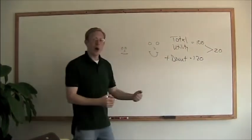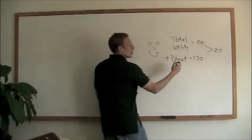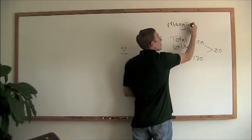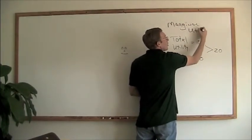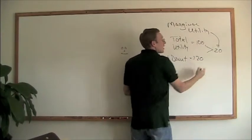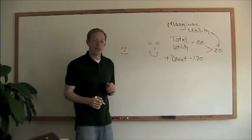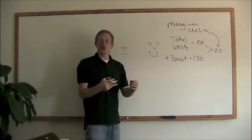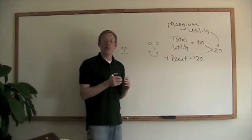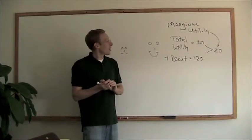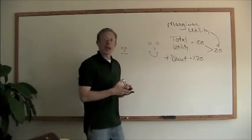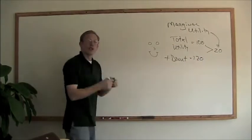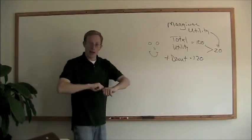The marginal utility — the change between these two totals — is 20 in this case. That change in utility at the margin is really what we want to pay attention to, because that's what helps us understand how people make choices and hopefully how they make optimal choices.